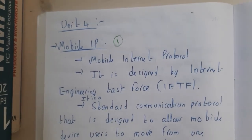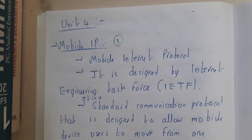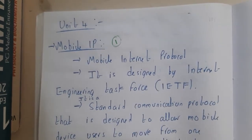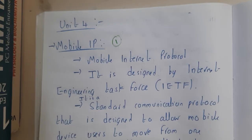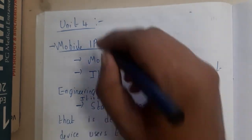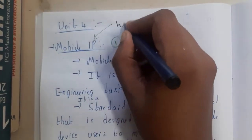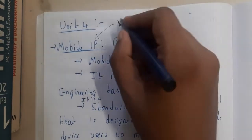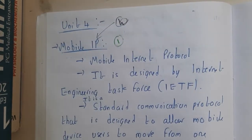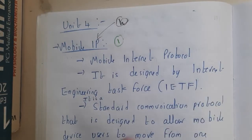Hello guys, we are back with our next lecture. In this lecture let us continue mobile computing Unit 4. The first topic of this unit is Mobile IP. The first question that comes to your mind is: we know IP, which is Internet Protocol — so what is Mobile IP? Can that mean that the IP can move?